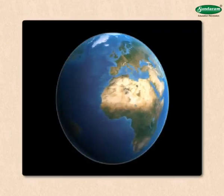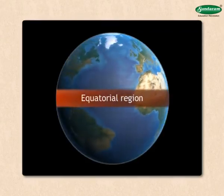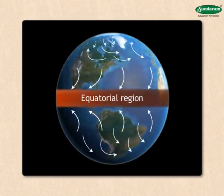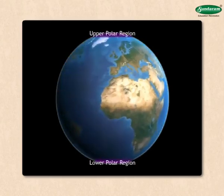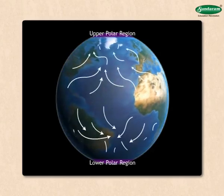Generally, the temperature in the equatorial region is high. Hence, the air pressure there is low. Whereas, the temperature is low in the polar regions and the air pressure high.